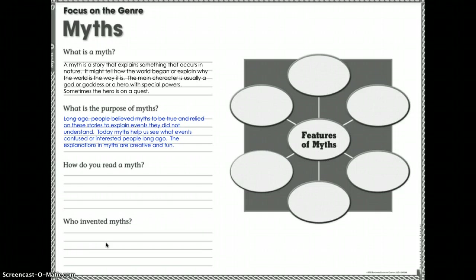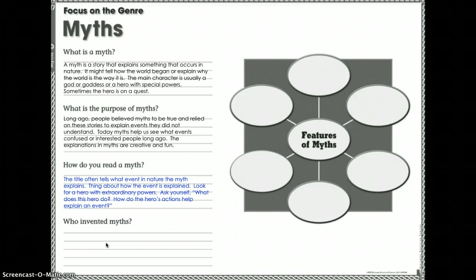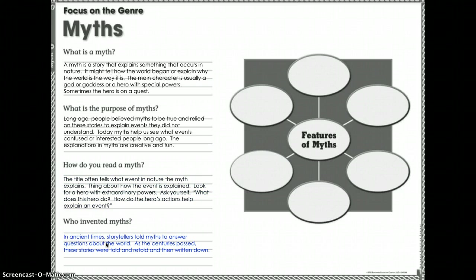It's all about trying to make sense of a world you don't understand. When reading a myth, the title often tells what event in nature the myth explains. Think about how the event is explained, look for a hero with extraordinary powers, and ask yourself what the hero does and how their actions help explain an event. Whether it's Percy Jackson or Hercules, it all explains something and helps us understand the world.